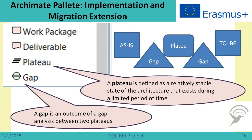Archimate also has an implementation and migration extension, which is meant for changing enterprise architecture. For example, when moving from an as-is state to a to-be state, we do it in several steps. A plateau means a relatively stable state of enterprise architecture existing at a particular slice of time. The difference between one specific state and another is called a gap, usually obtained by gap analysis. This extension also includes work packages and deliverables.